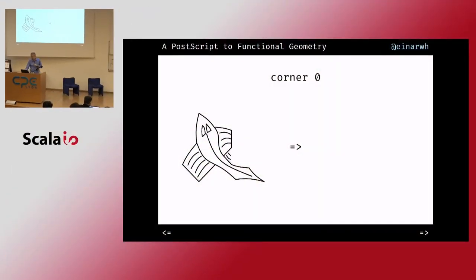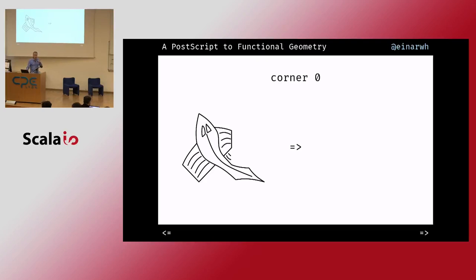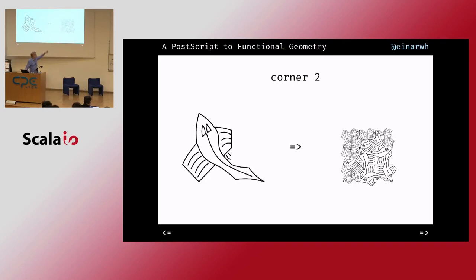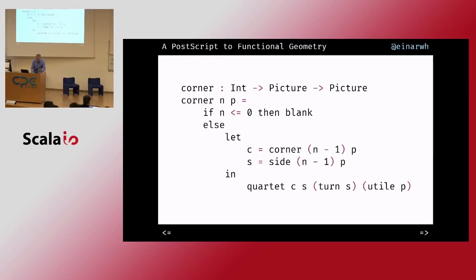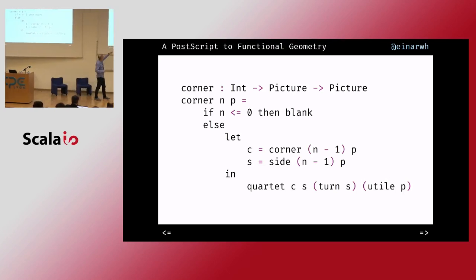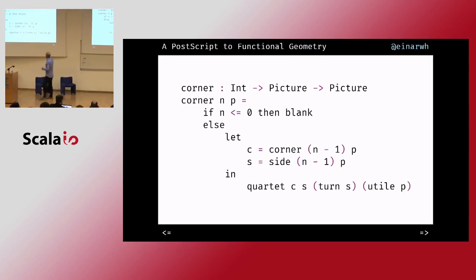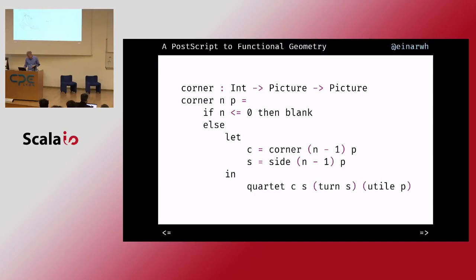Similarly for the corner: it starts out as blank, then a u-tile, but then both a side recursion and a corner recursion are going on. I put a copy of side, a turned copy of side, and then the corner itself — so it grows out. You can see I'm using the quartered thing to create a 2x2 grid, with a corner recursion, a side recursion, and the u-tile.